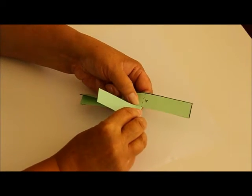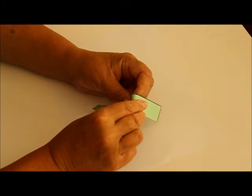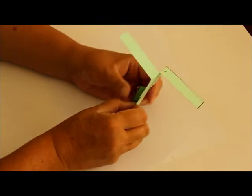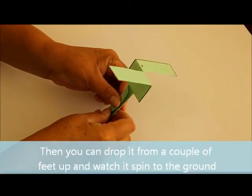Fold A and B down in opposite directions to create your helicopter rotor. There it is.